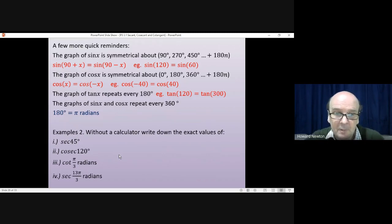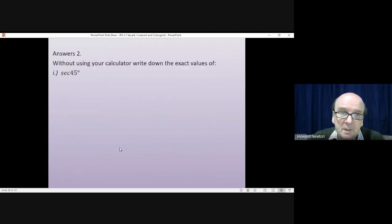OK, we'll have a look at these. So, the first question, sec of 45 degrees. First thing that you'd do probably is say, well, sec is 1 over cos, so we need 1 over the cosine of 45 degrees.